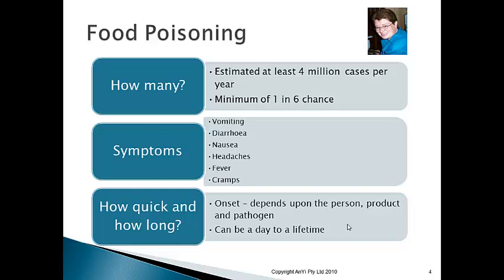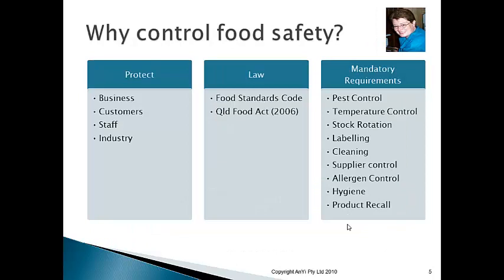Food poisoning is serious, it can kill people, and it has potentially long-term effects. Why control it? It's about meeting the law and protecting four groups: customers, staff, the business, and the industry. Customers need to be safe from food you're serving them. Staff are protected when they follow proper rules and procedures — you should follow them and not make up your own.